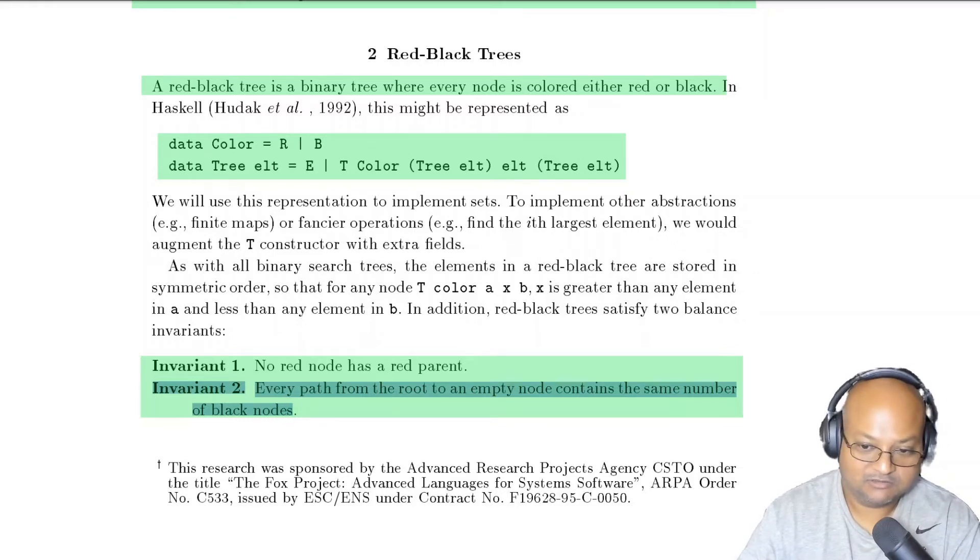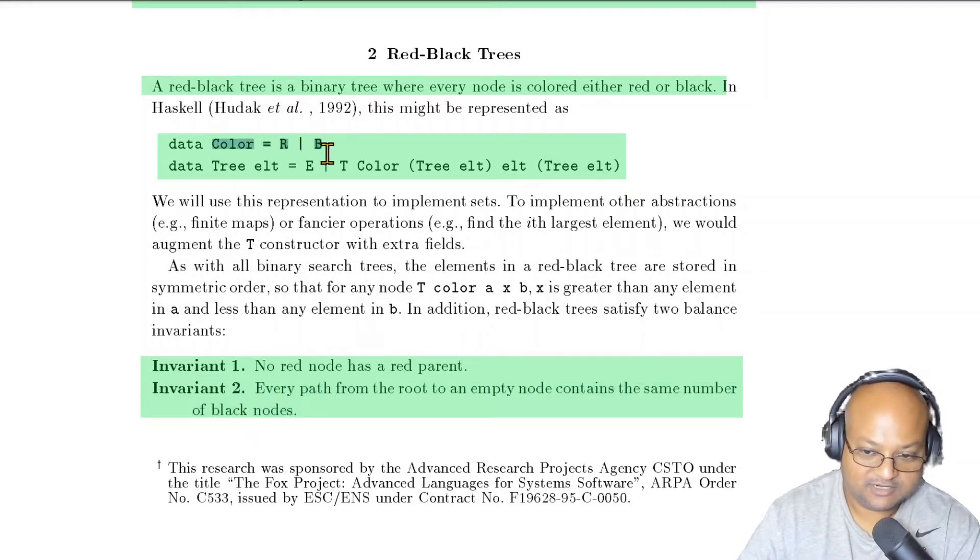So let's go through the implementation in the paper. It's pretty short and straightforward. We simply say that color is either red or black, and a tree which holds elements of type ELT is either E, which is the empty tree, or it is a tree which has a color, a left tree, a right tree, and the element that it holds. So that's a fairly simple and literal representation into Haskell of what a red-black tree is.